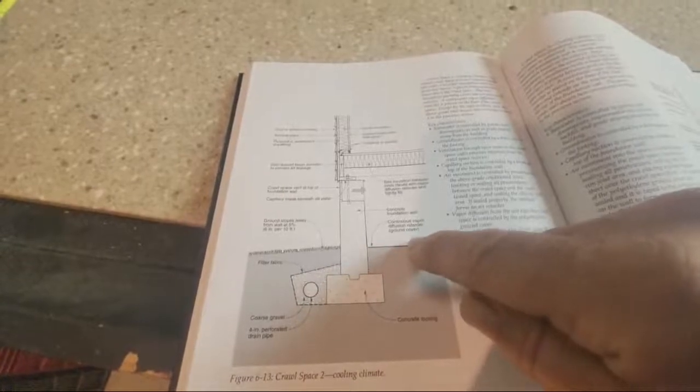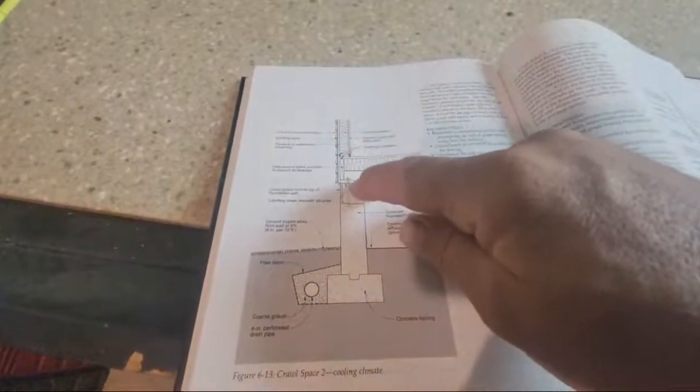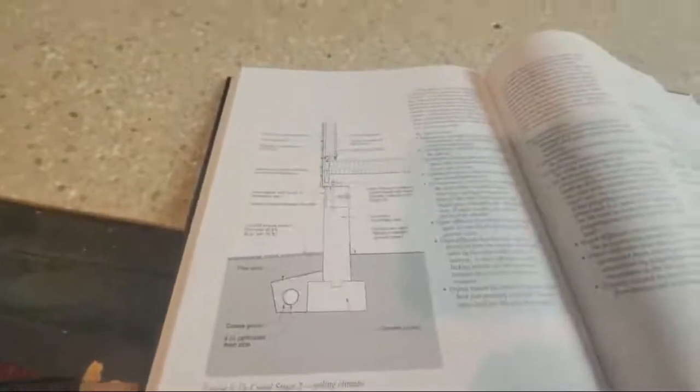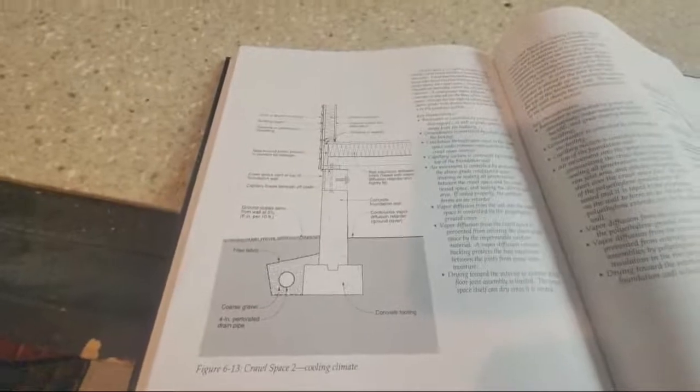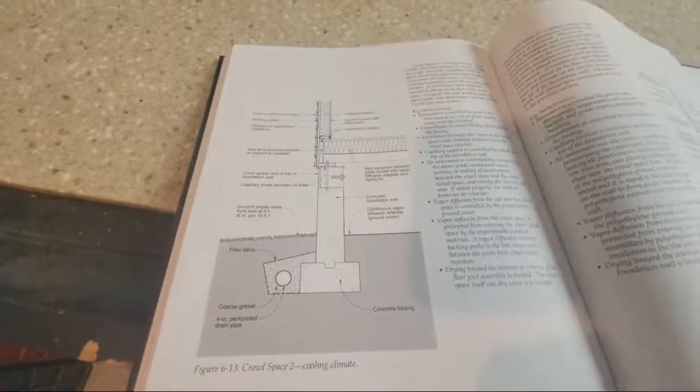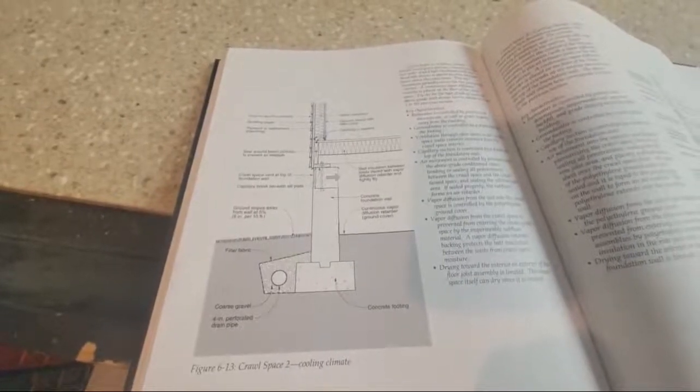Hopefully this vapor barrier is 100% sealed in both of these crawl spaces. A lot of people in Cleveland will take this vapor barrier all the way up to the wall and tag it on top so it's sealed. A really good vapor barrier to use could be a radon blanket because the millage is thicker.